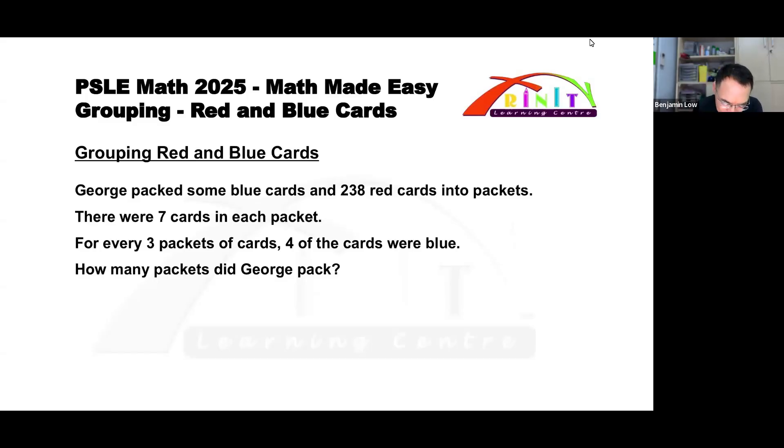Let's get started. It says that George packed some blue cards and 238 red cards into packets. This means we do not know how many blue cards. It says that there are 7 cards in each packet.